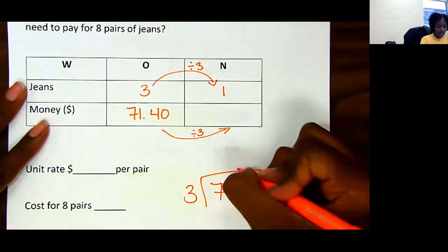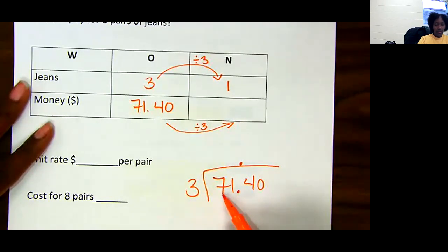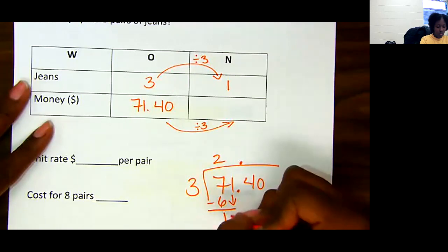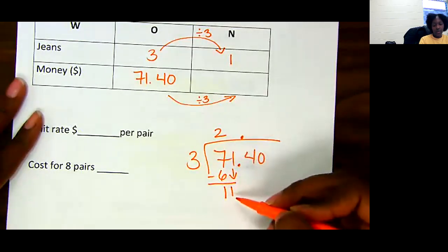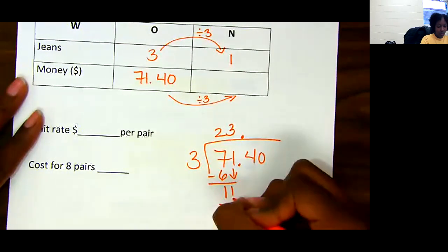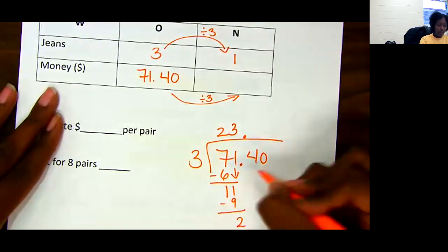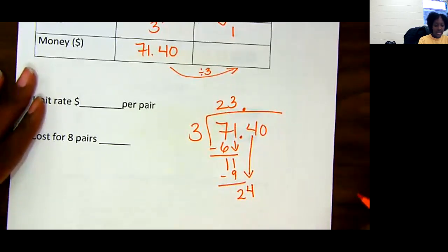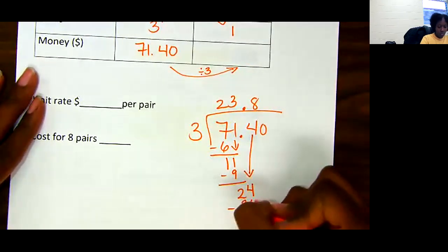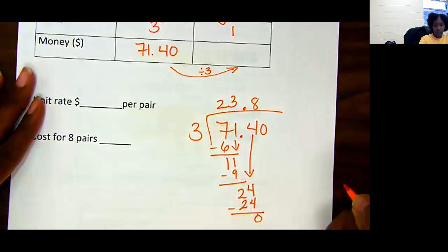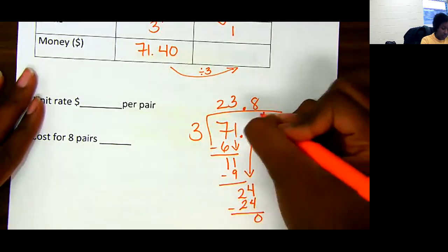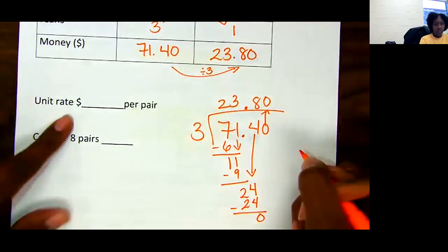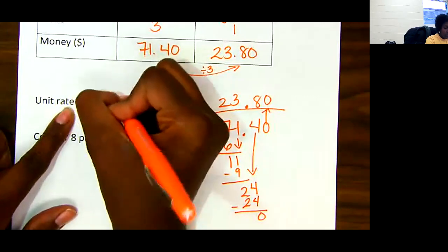So $71.40, I'm going to divide that by 3. Remember, I have a decimal, so I need to bring that up. 3 into 7, I can do that two times with one left over. Let's see. 3 times 4 is too much, that'll give you 12. So let's do 3 times 3, which is 9. 9, 10, 11. It's 2 left over. Bring our 4 down. I know that 3 times 8 will give me 24. 0 left over, but I still have a 0 here, so I need to bring that 0 up. So one pair of jeans costs $23.80.